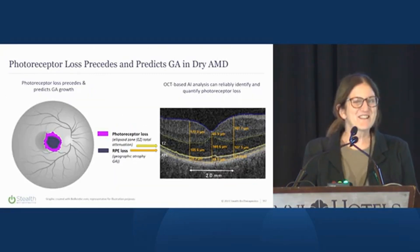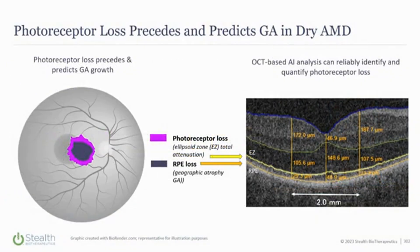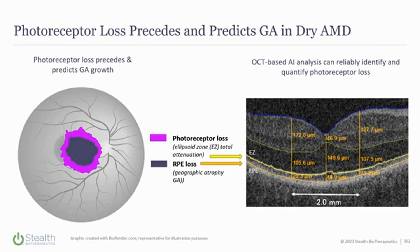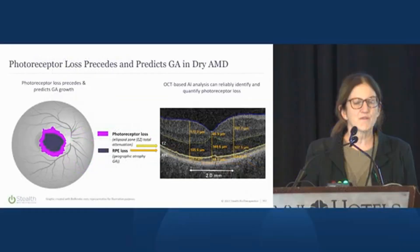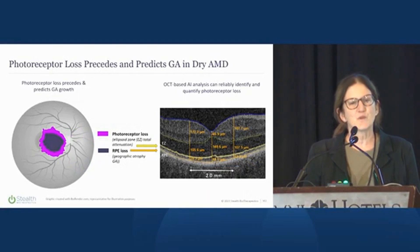When we think about the area of photoreceptor loss, we saw this at baseline in our patients — it's about twice the size of GA. The GA, shown in blue, is really growing into that area of photoreceptor loss. So putting a ring fence around the photoreceptor loss should eventually slow GA progression, and importantly also help preserve and possibly improve vision if you can address the bioenergetics issue.